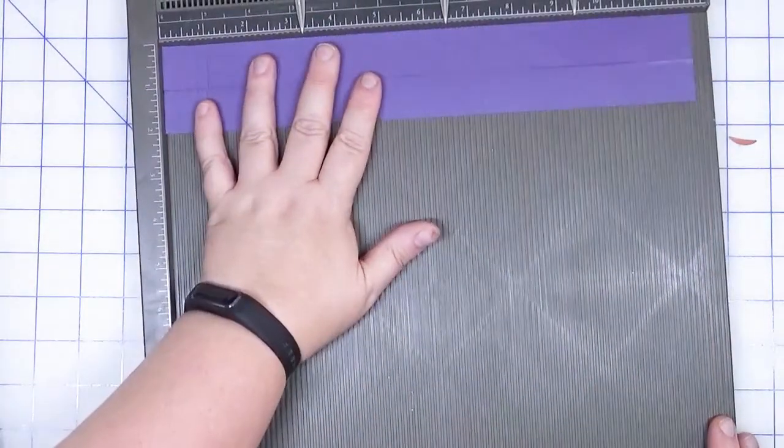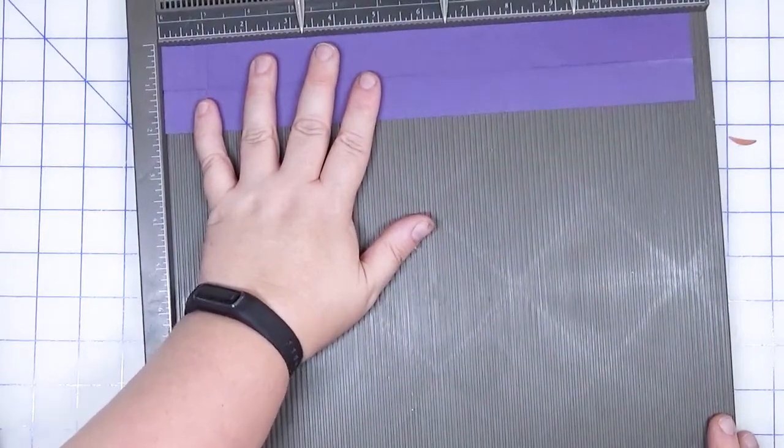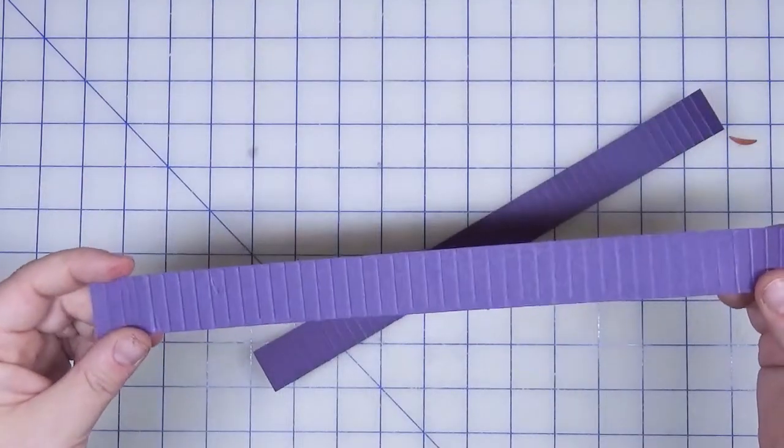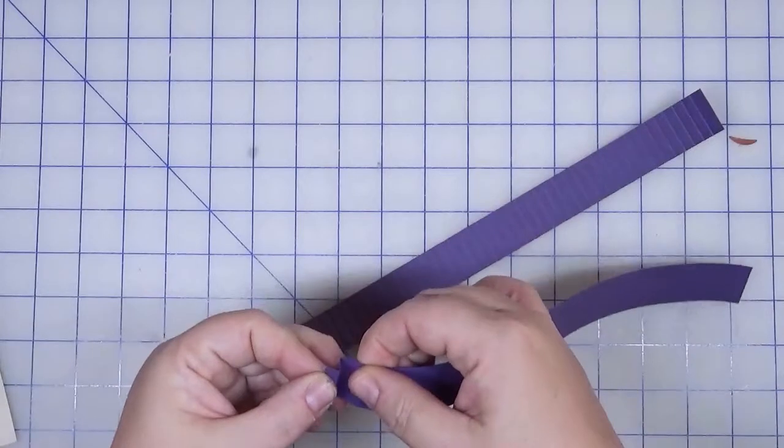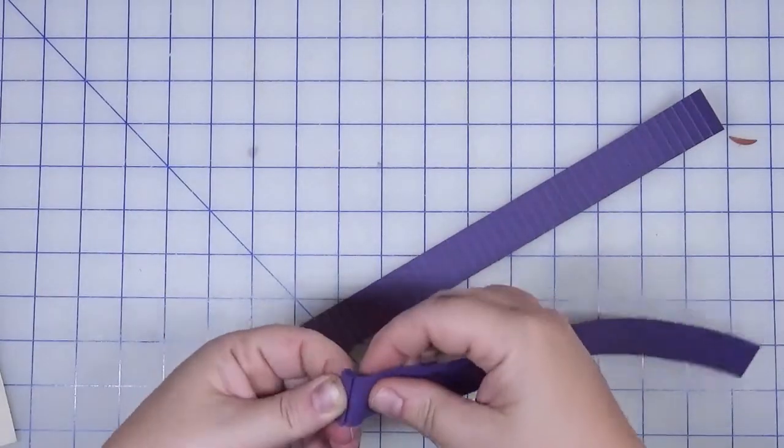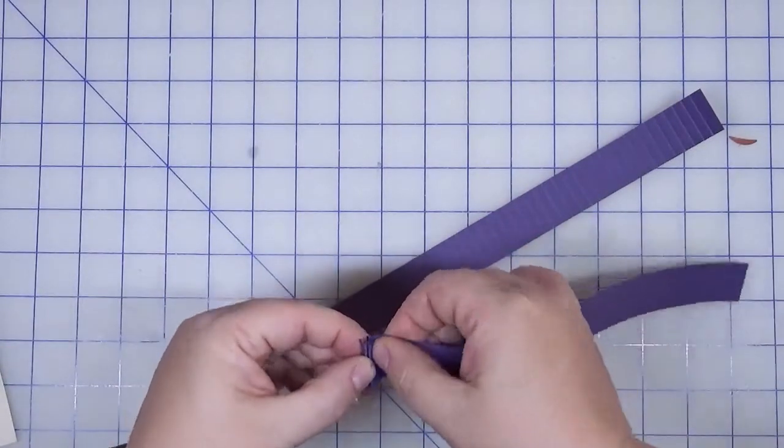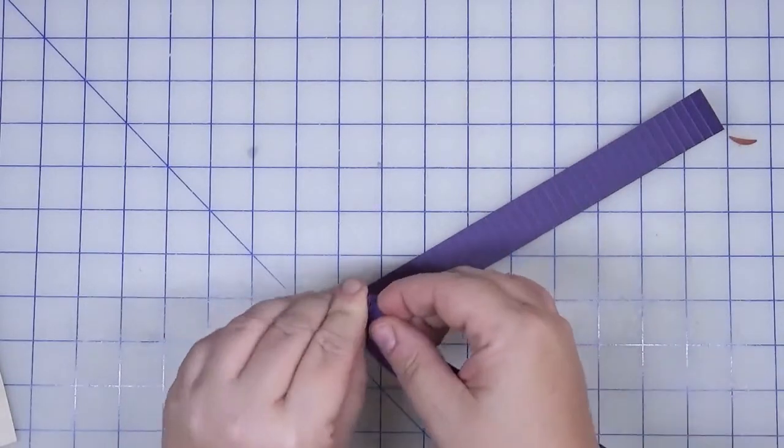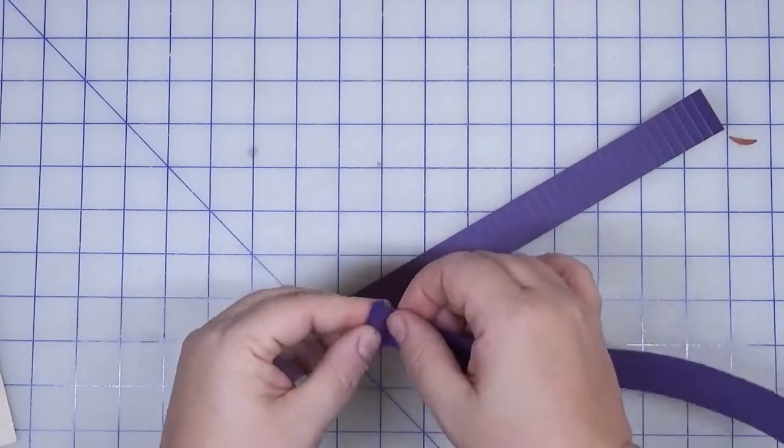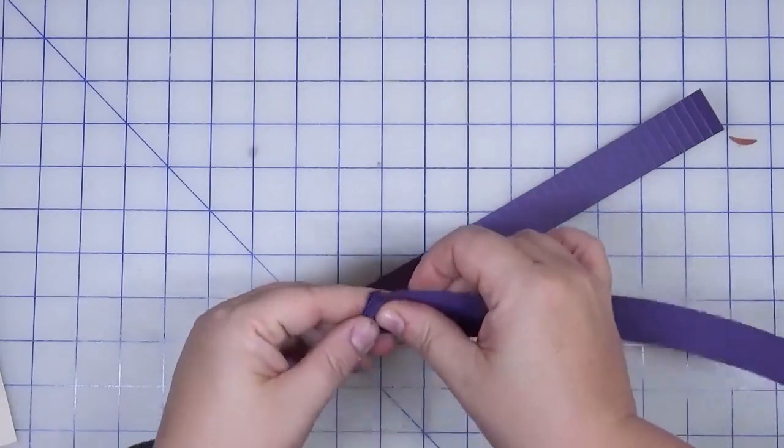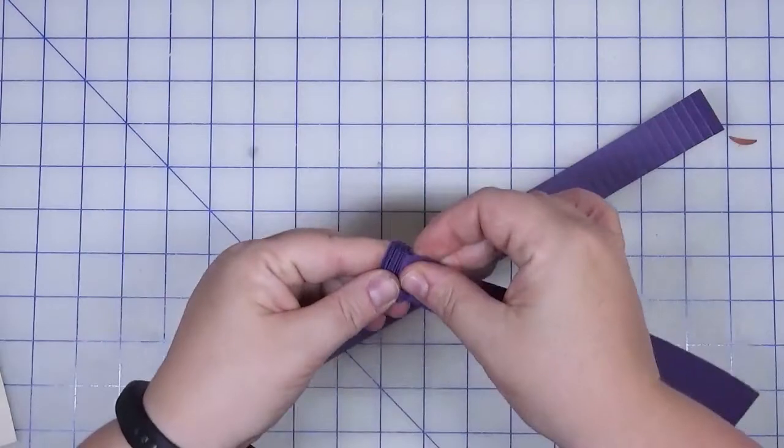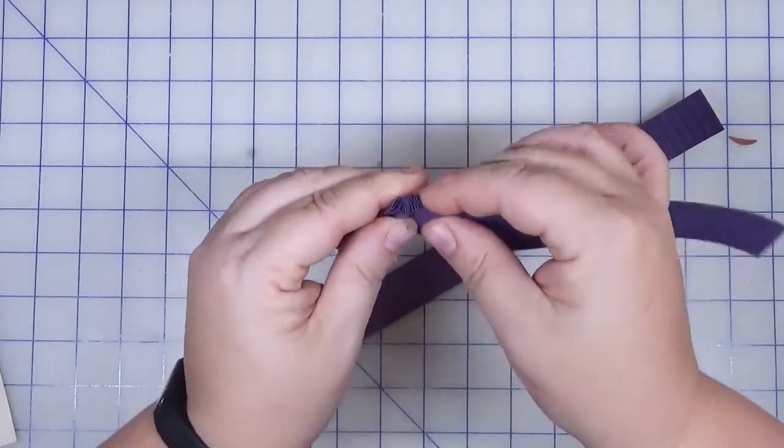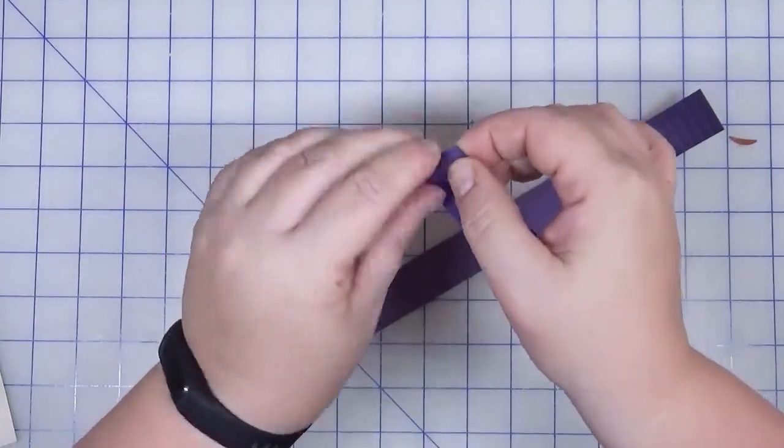Every quarter inch we're going to score. You can try and butt them up and score them that way or do them separately. I will come back when everything has been scored. Okay, now that these have been scored every quarter inch, we are just going to accordion fold them all the way down. Just accordion fold, don't worry too much about getting the scores super crisp at this point. You can always go over with a bone folder afterwards.